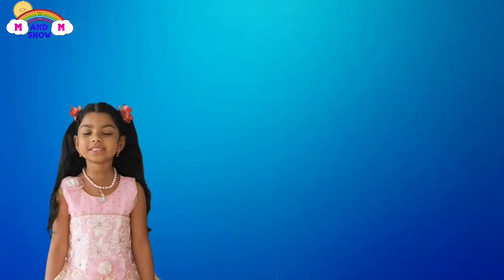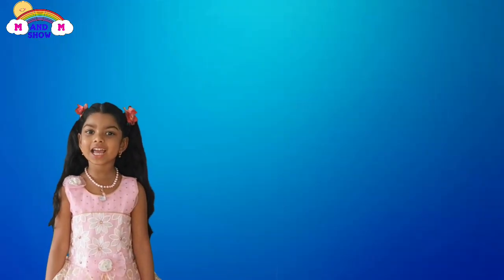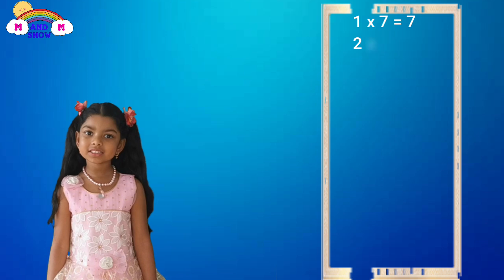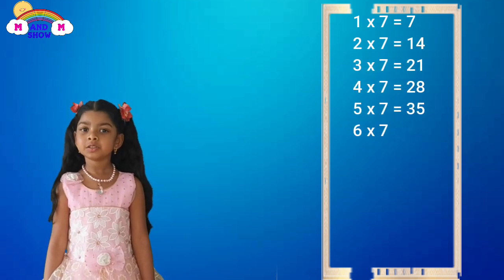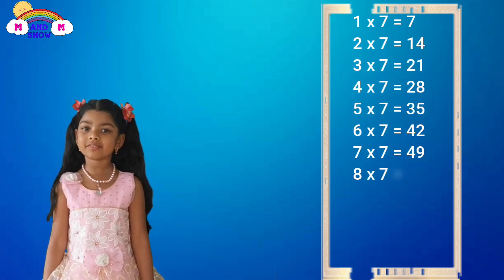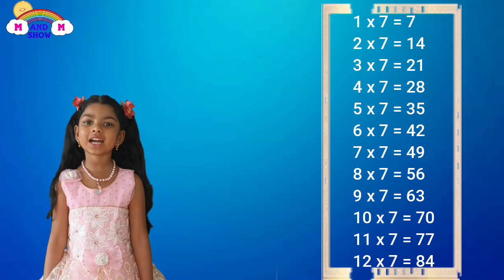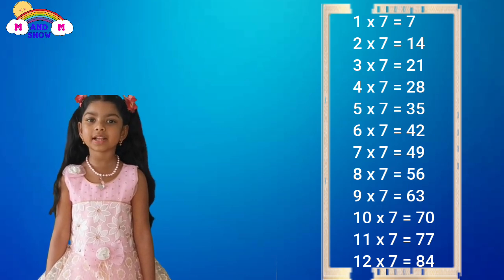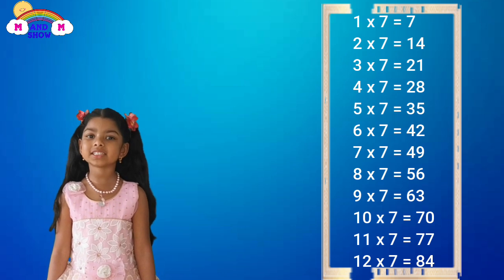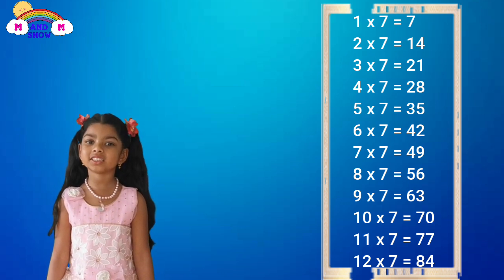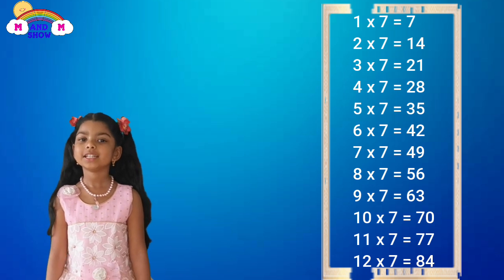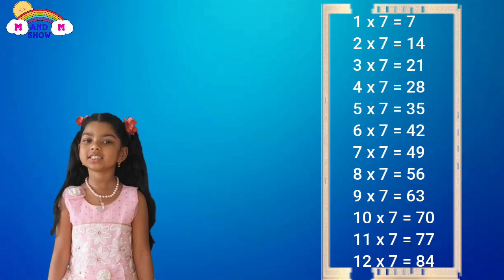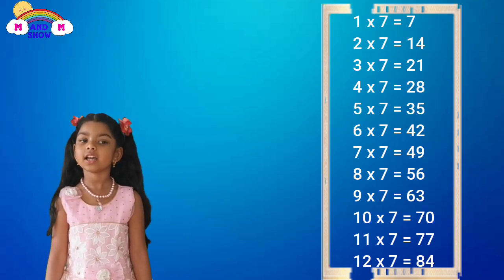And now it's time for the 7 timetables. 1 x 7 is 7, 2 x 7 is 40, 3 x 7 is 21, 4 x 7 is 28, 5 x 7 is 35, 6 x 7 is 42.